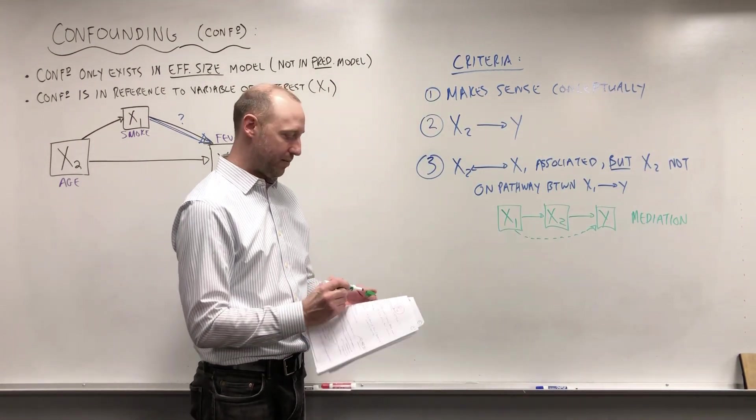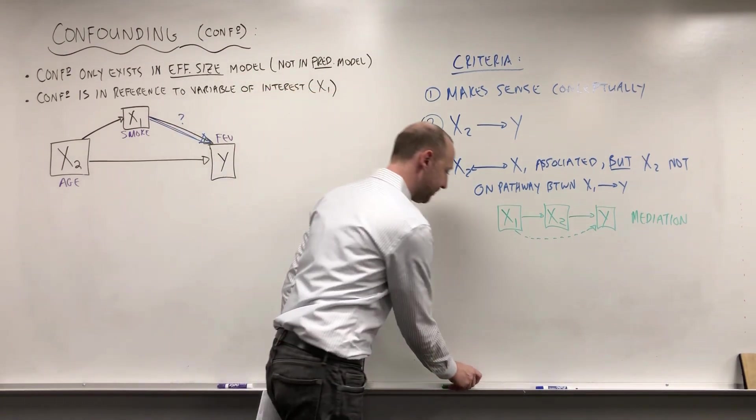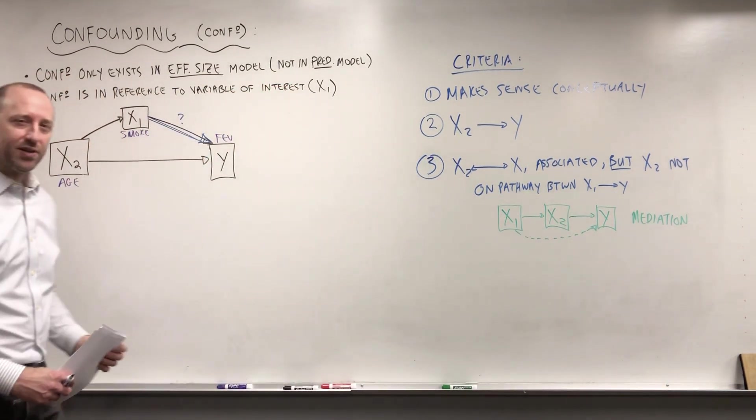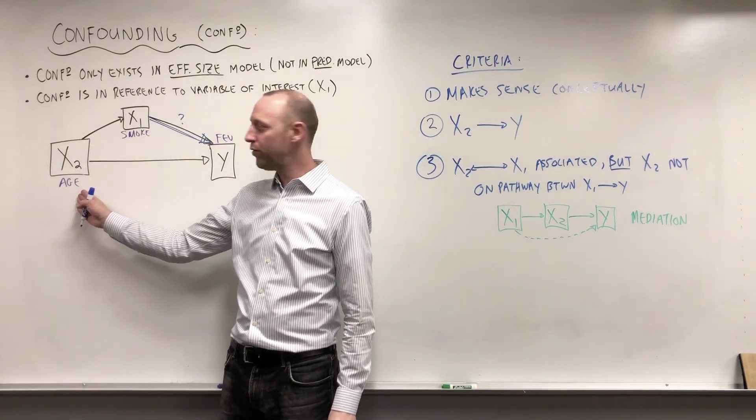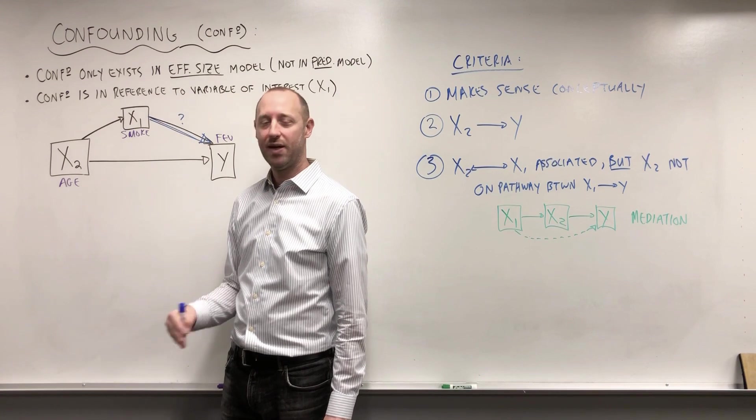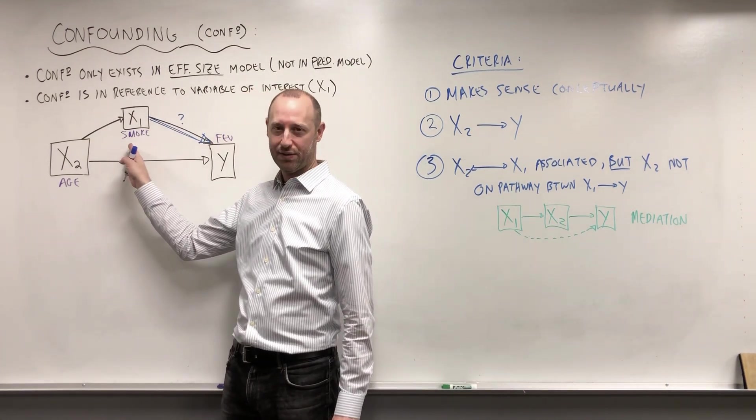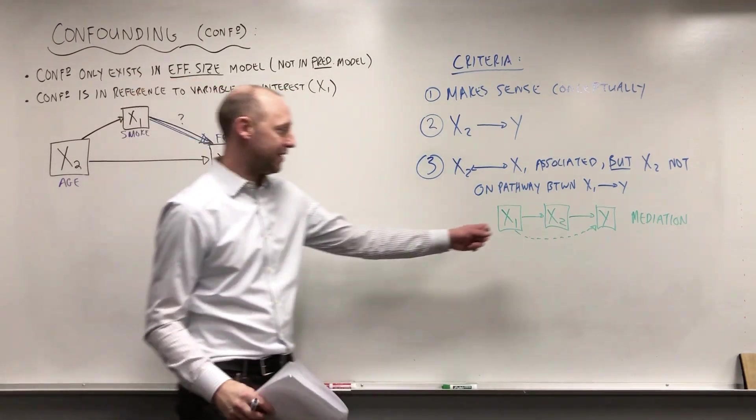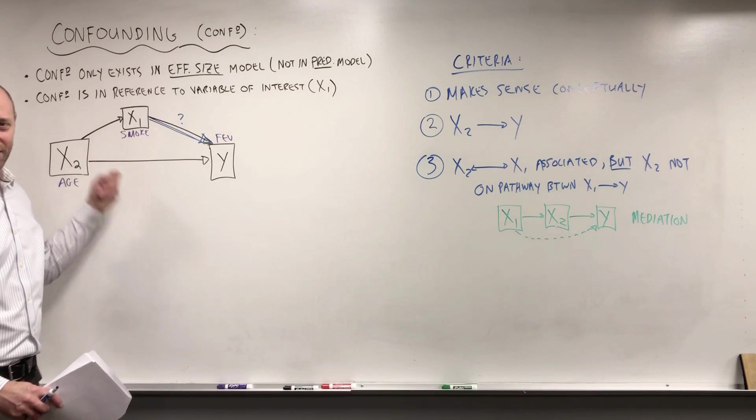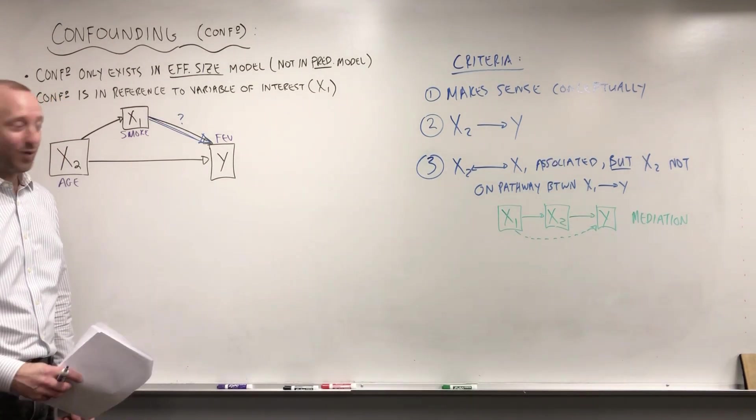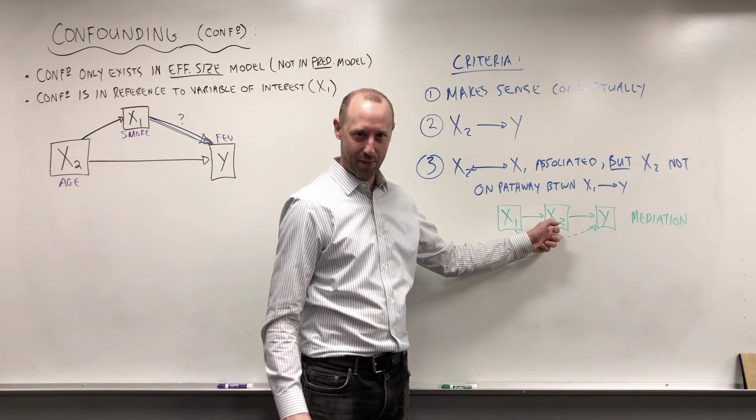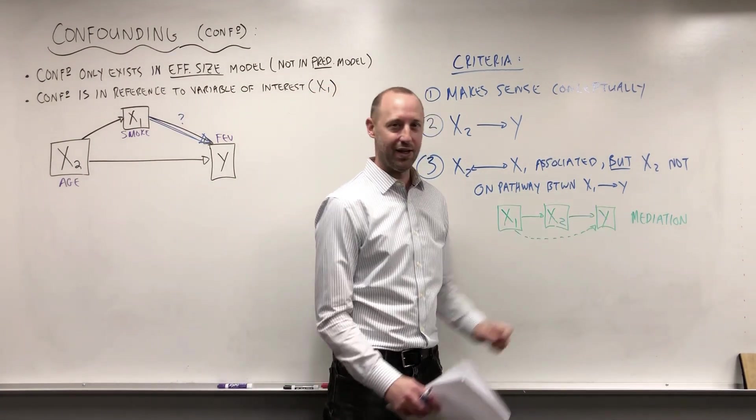In a separate video, we'll talk a little bit about what it means for a variable to be a mediator. Let's think about it conceptually. Does it make sense that X2 and X1 are associated? I'd say in our data set, it does. As children get older, they're more likely to smoke. It doesn't mean they're going to, but remember, this data set was kids aged 3 to 19. So, as they become 10, 11, 12, 13, 14, as they're getting older, the likelihood of smoking is going to increase. Do we have something where X1 directly causes changes in X2? Does smoking affect your age? No, it doesn't. Smoking can't have a direct effect on your age. We do have X1 and X2 being associated, but X2 is not on the pathway between them. We don't have smoking affecting age, which then in turn affects the lung capacity.